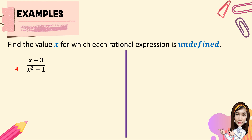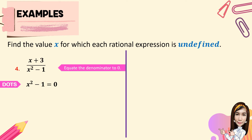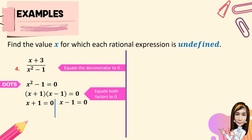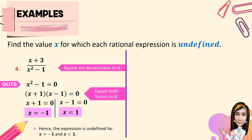For number 4, we have x plus 3 all over x squared minus 1. We equate the denominator to 0: x squared minus 1 equals 0. This is the difference of two squares, so the factors are x plus 1 times x minus 1 equals 0. Equating each factor to 0 gives x equals negative 1 and x equals 1. The expression is undefined for x equals negative 1 and x equals positive 1.